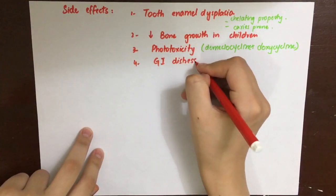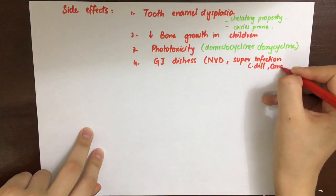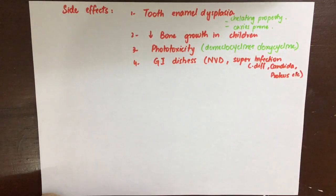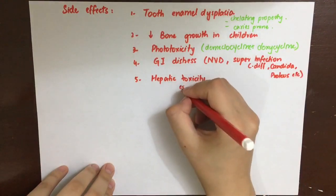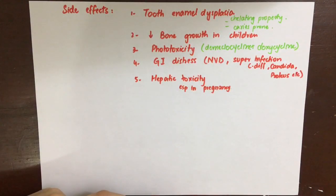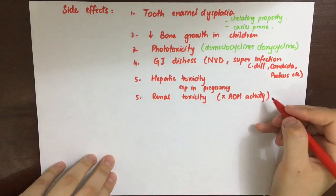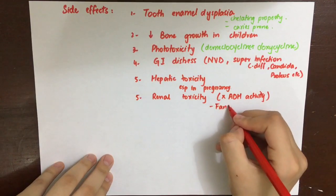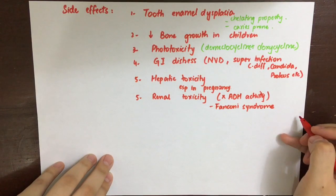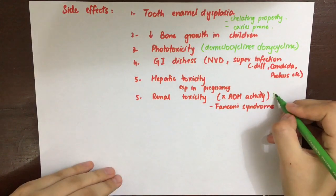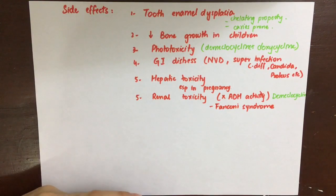Tetracyclines can cause GI distress including nausea, vomiting, and diarrhea. They can also cause superinfection because incomplete absorption from the gut disturbs gut flora, leading to superinfection by C. difficile, Candida, and Proteus. They cause hepatic toxicity, which is especially increased in pregnancy, leading to acute hepatic necrosis and fatty changes. Demeclocycline's ADH-opposing property causes nephrogenic diabetes insipidus. Outdated tetracyclines can cause Fanconi syndrome, presenting with polyuria, proteinuria, and acidosis.